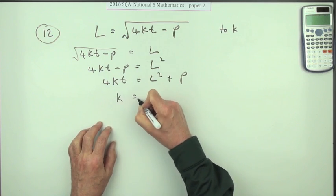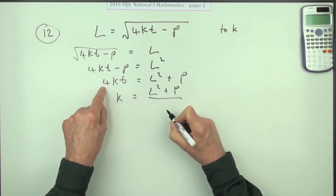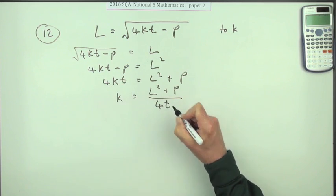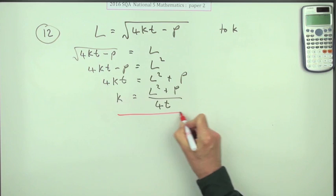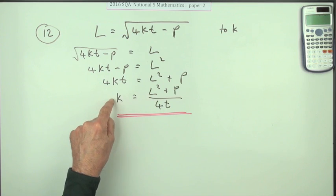There's no point in two separate divisions to do that. So you've got L squared plus P divided by the four and also divided by the T. And that's it done, K is on its own, it's now the subject.